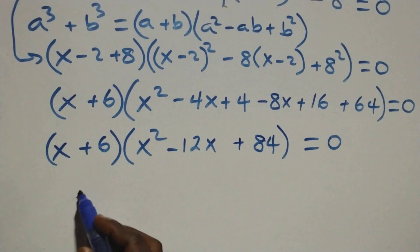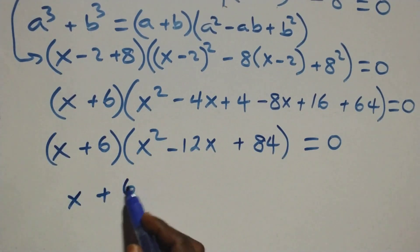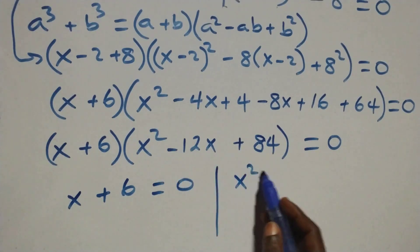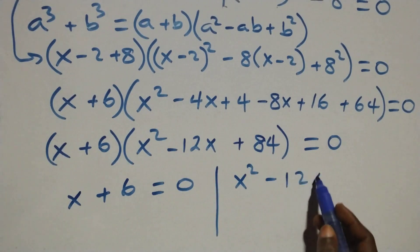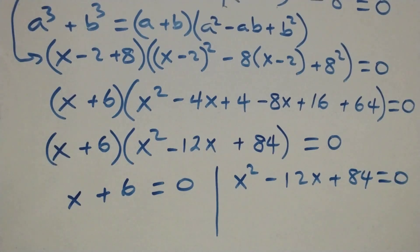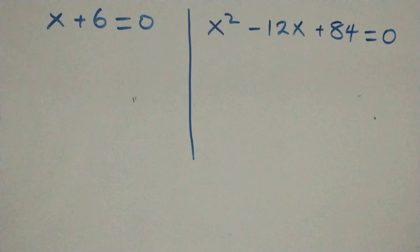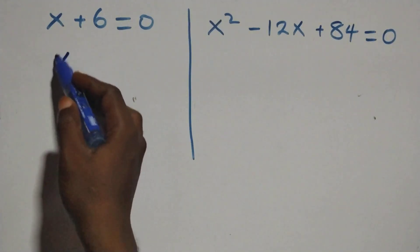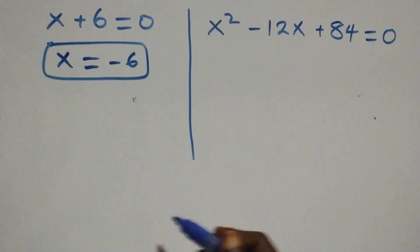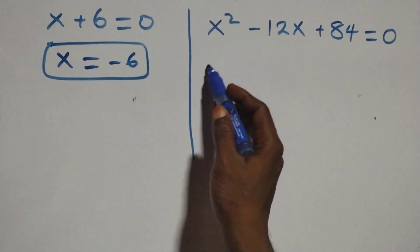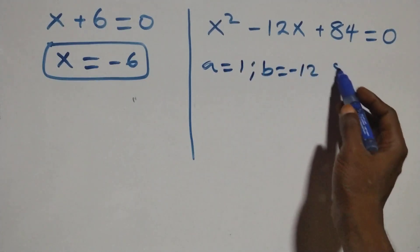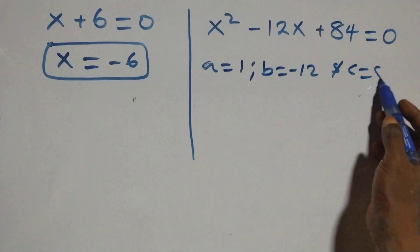We have two possible sub-cases: x + 6 = 0, giving x = −6, which is a real solution. Or we have the quadratic equation x² − 12x + 84 = 0, where a = 1, b = −12, and c = 84.